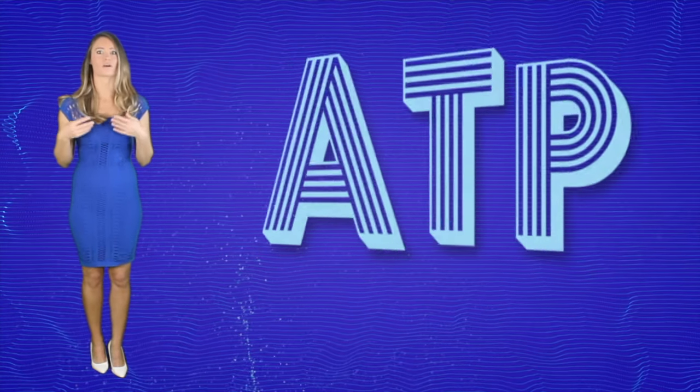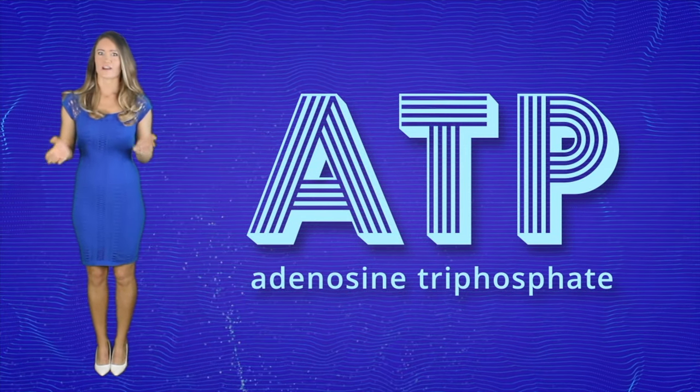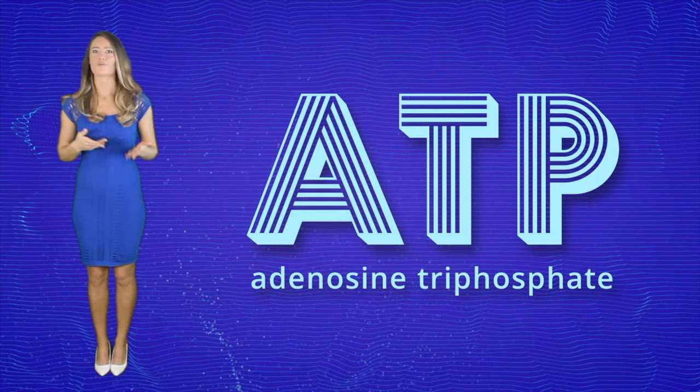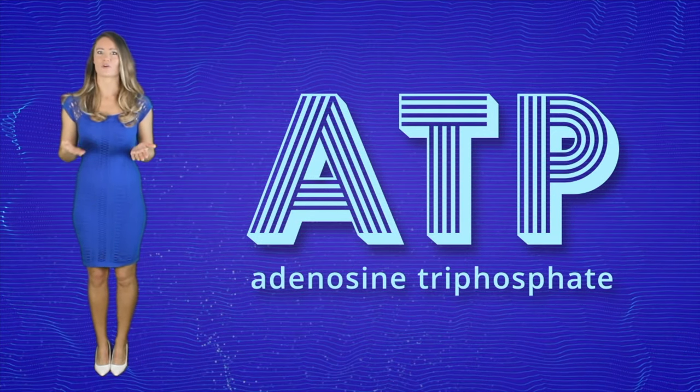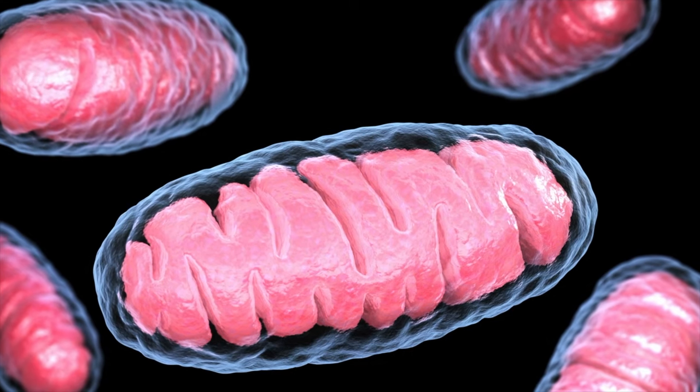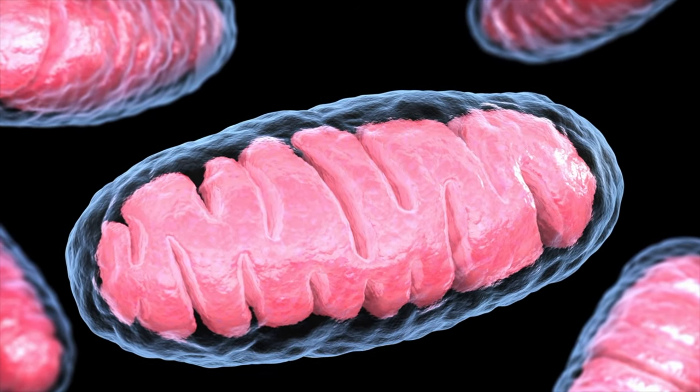You see, if we want to contract our muscles, we need ATP or adenosine triphosphate. Think of it as some sort of currency our body has to pay up before the muscle can shorten. ATP can be produced in the mitochondrion via cellular respiration.